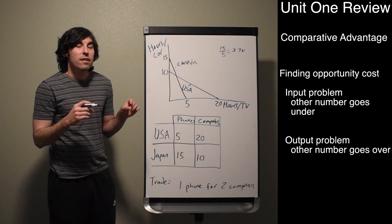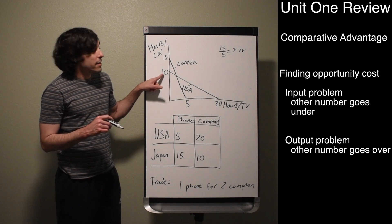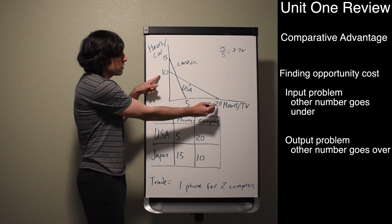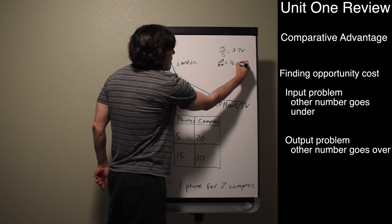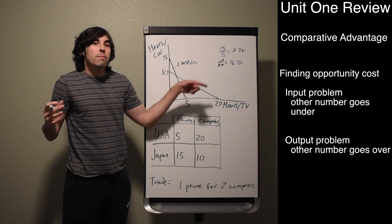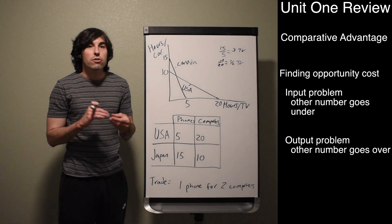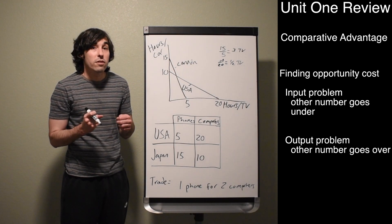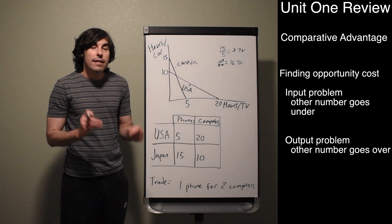Now we need the United States' opportunity cost. The US takes 10 hours to produce a car and 20 hours to produce a TV. In an input problem the other number goes under: 10 divided by 20 equals one-half. So every time the US makes one car, they give up half a TV. Because one-half is less than 3, the United States has the comparative advantage in producing cars. So the US will specialize in cars and Canada will specialize in TVs.